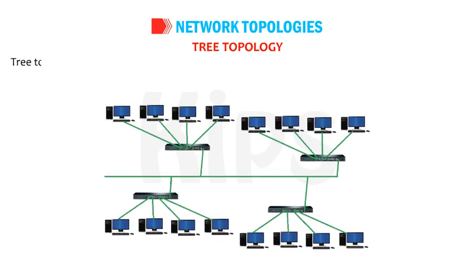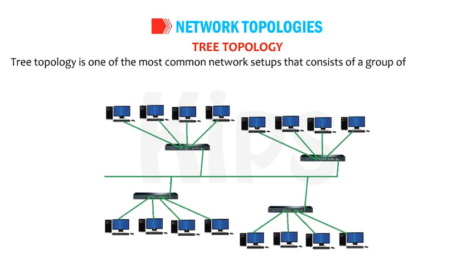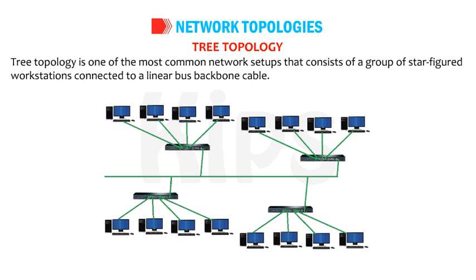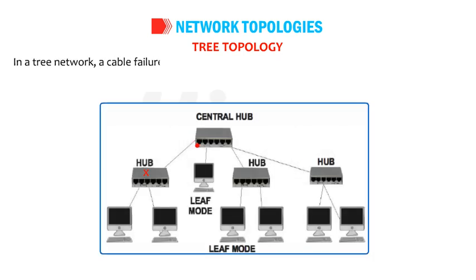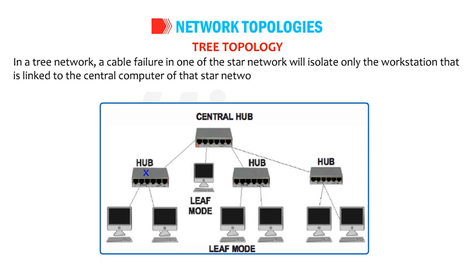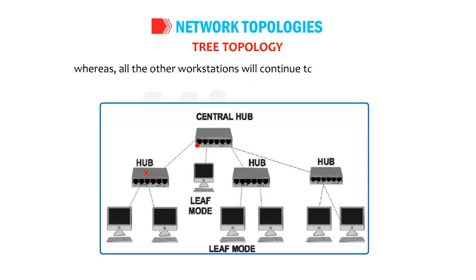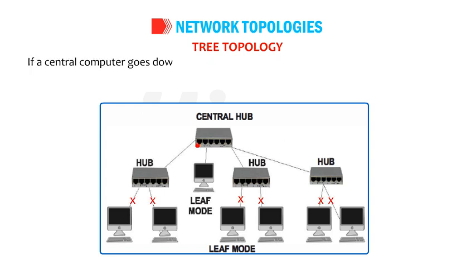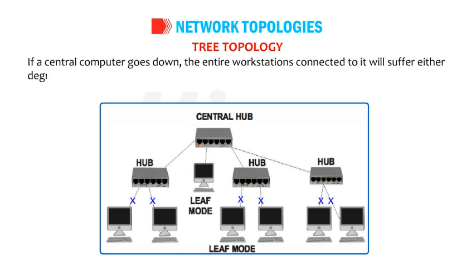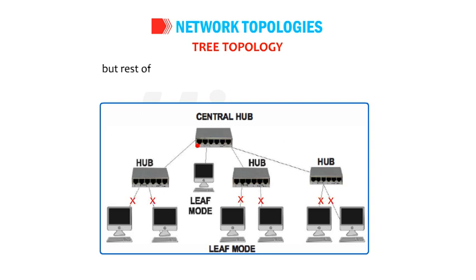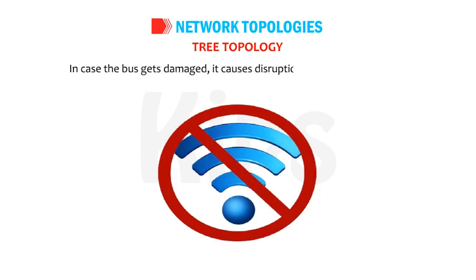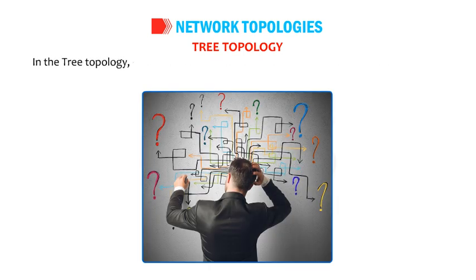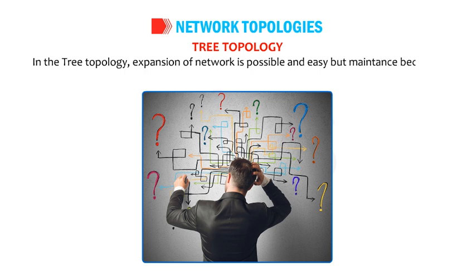Tree topology consists of a group of star-configured workstations connected to a linear bus backbone cable. One star network is connected to other star networks. A cable failure in one star network will isolate only the workstations linked to the central computer of that star network, while all other workstations continue to function normally. If a central computer goes down, workstations connected to it will suffer degraded performance or complete failure, but the rest of the network continues normally. If the bus gets damaged, it causes disruption to the entire network. Expansion is possible and easy, but maintenance becomes difficult.